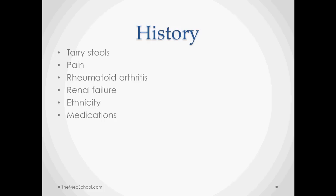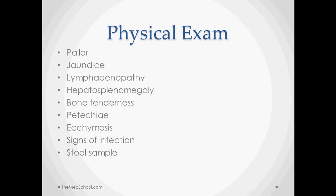Pain, rheumatoid arthritis, which is associated with autoimmune destruction of red blood cells, renal failure. Remember, the kidneys are where erythropoietin is made, which is the major hormone to stimulate red blood cell production. Ethnicity is associated with certain types of genetic anemias like thalassemia that you see in Mediterranean populations and medications, many of them can cause anemia as well.